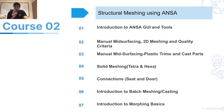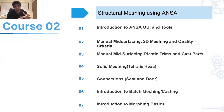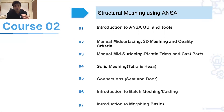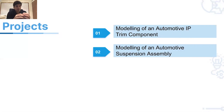Course 2 is structural meshing using ANSA — another popular pre-processing tool. You get introduced to FEA, the ANSA graphical user interface, manual mid-surfacing, 2D meshing, solid meshing, connections, batch meshing, and morphing basics. There are two projects: meshing an IP trim component of a car, and modeling of an automotive suspension assembly. You also work on eight industry-relevant assignments.